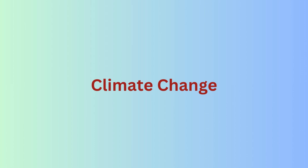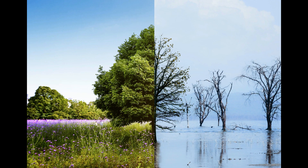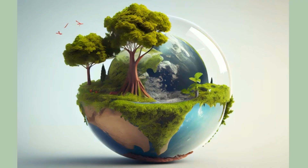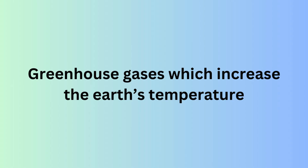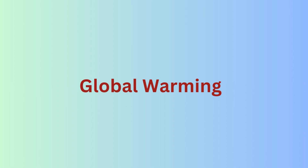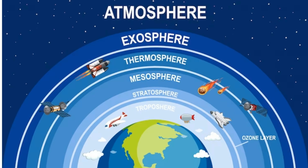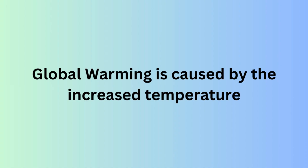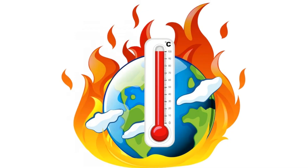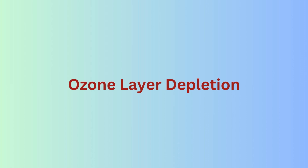Let us discuss the different environmental issues one by one. First is climatic change. Climate change is one of the biggest concerns in today's scenario of environmental issues. It has been exacerbated over the last few decades with the destruction of natural habitat, global warming, overpopulation, and pollution. Greenhouse gases which increase the earth's temperature are a major concern of climate change. Environmental changes cause destructive impacts like the melting of glaciers, changes in seasons, epidemics, etc. Global warming is caused by the increased temperature of the earth's environment due to the burning of fossil fuels, emissions from automobiles, and chlorofluorocarbons in the atmosphere. This increase in the temperature of the earth's atmosphere across the globe is known as global warming.